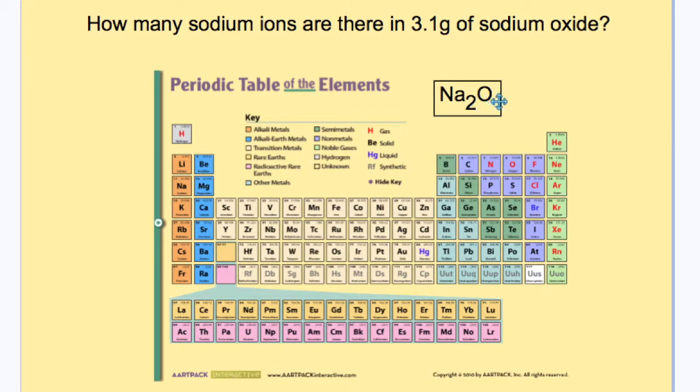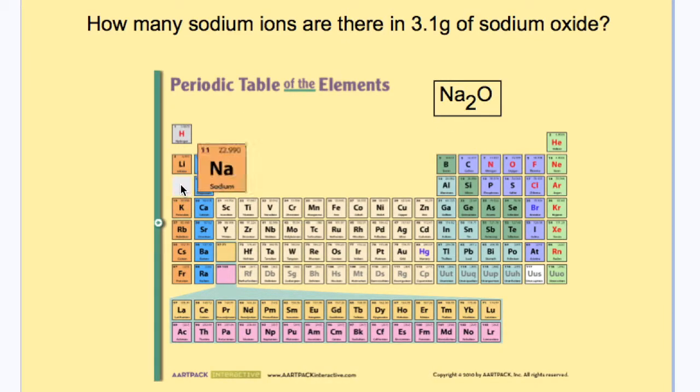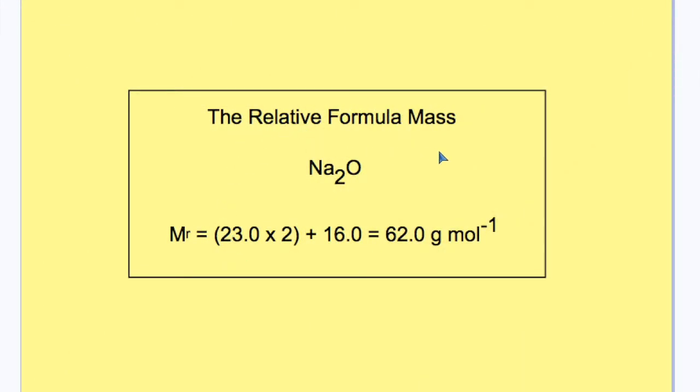So the formula mass for sodium oxide can be determined from the periodic table. So sodium with 23, and oxygen with 16. And then we can determine the relative formula mass of sodium oxide as shown here. 23 times 2 plus 16, which comes to 62 grams in 1 mole of sodium oxide.